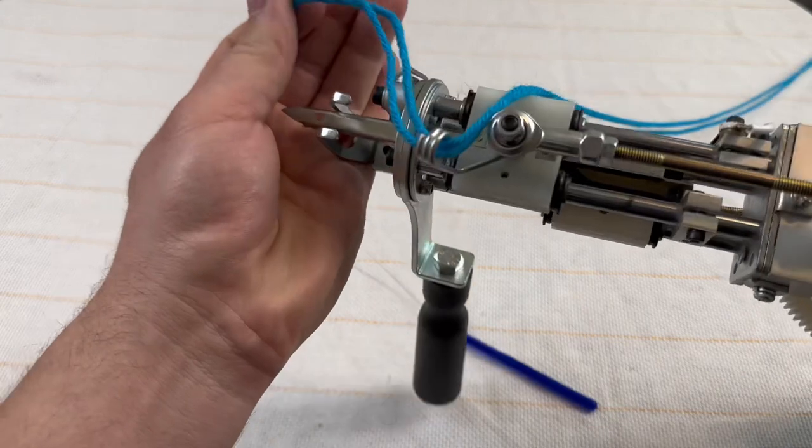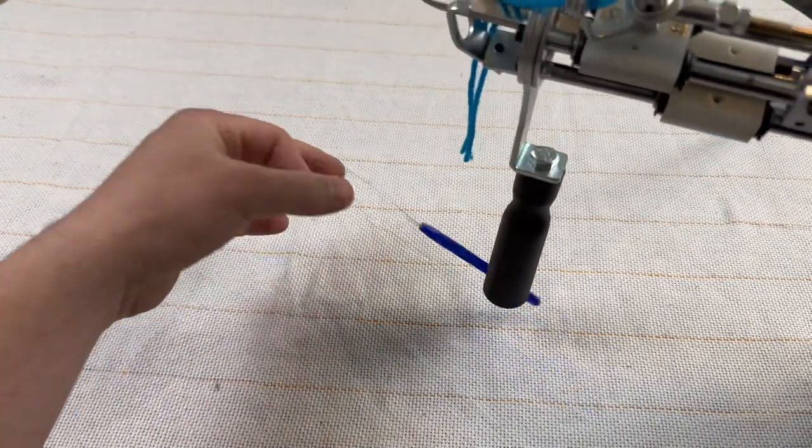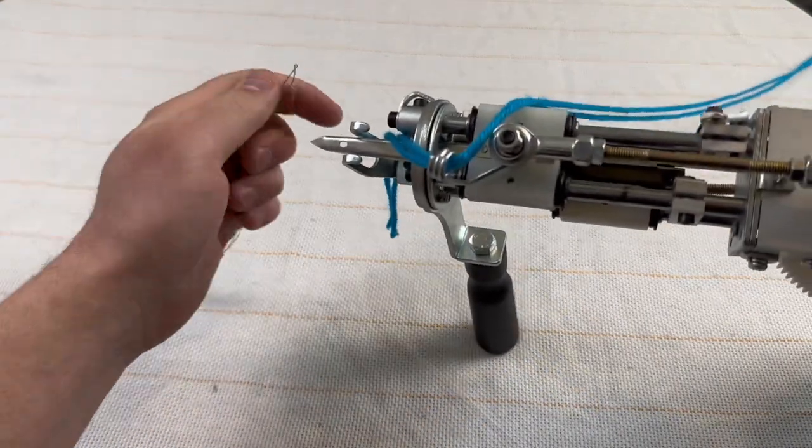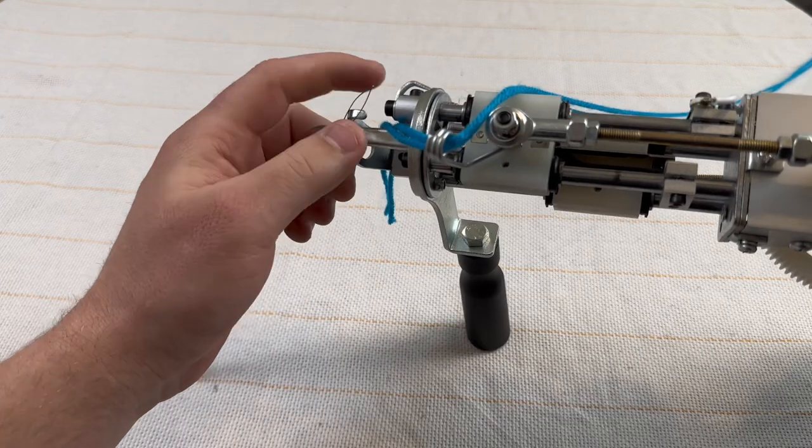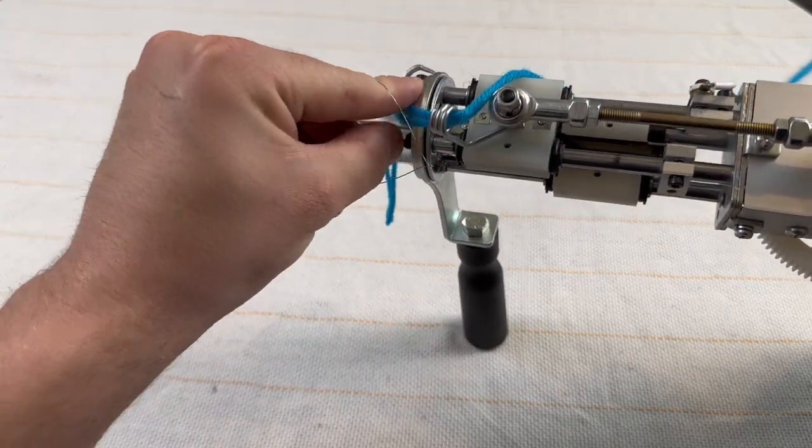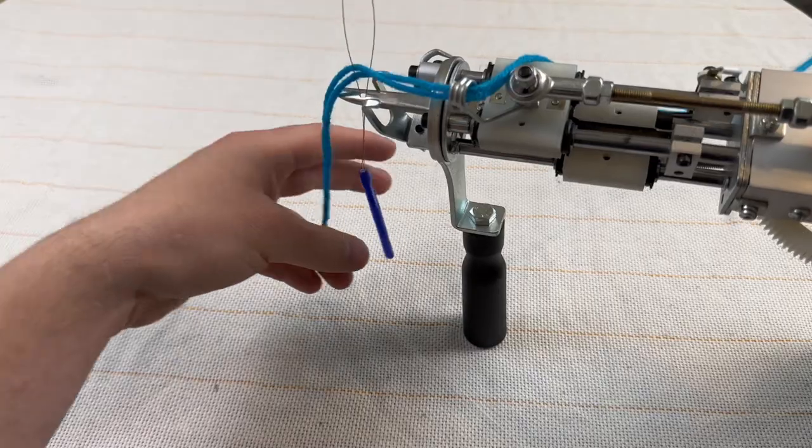When you receive your gun in the mail it'll look just like this and you'll notice that you can put the yarn through this little hole on the needle very easily. But the problem with that is that the yarn could easily slide out as well.